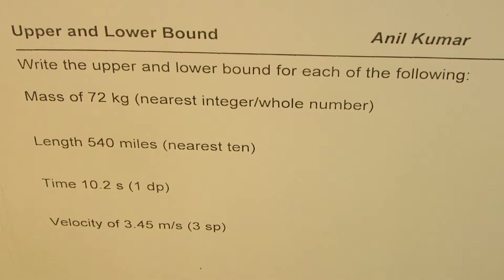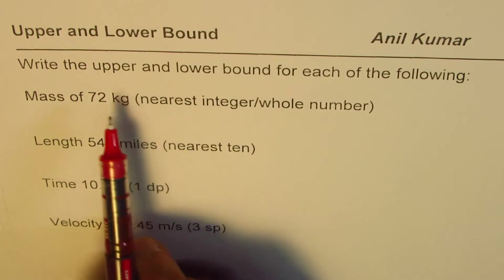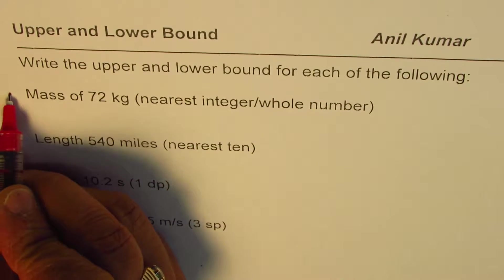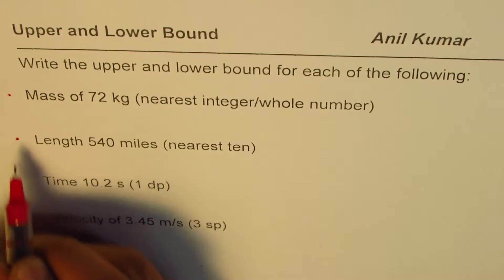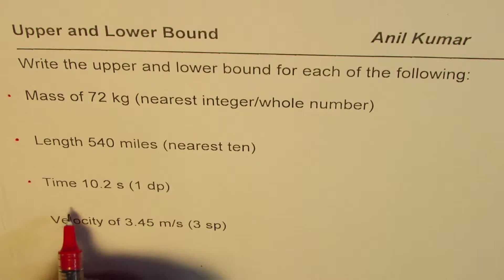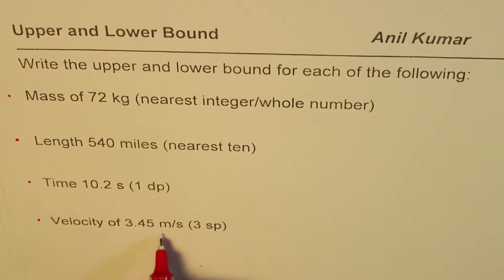I'm Anil Kumar and in this video we'll try to understand the meaning of upper and lower bound and we'll try to figure out how to find these values for different physical quantities. The question here is write the upper and lower bound for each of the following: first one we have the mass of 72 kg, second is length 540 miles, third one is time 10.2 seconds, and then we have velocity of 3.45 meters per second.